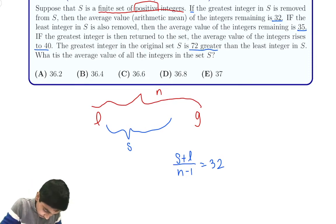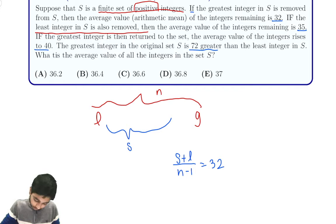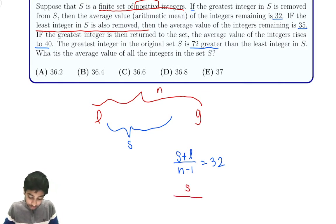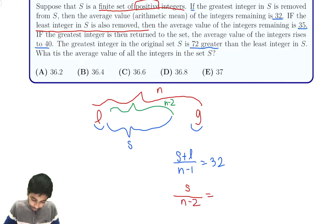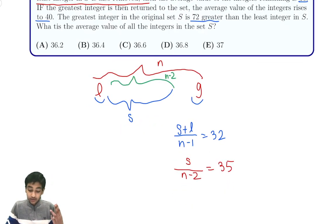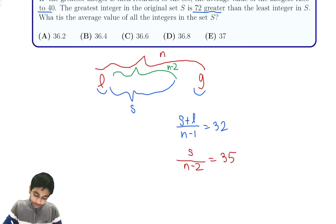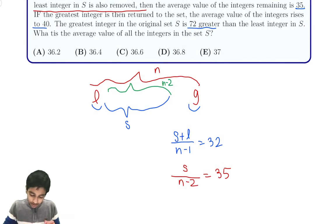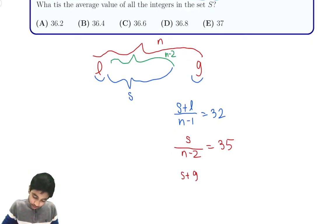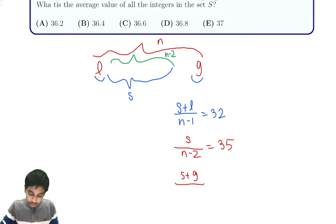Next, we remove the least integer. Now we're left with just s — the sum of the middle terms — over n minus 2 integers, so s divided by n minus 2 equals 35. Then the third condition: we put the greatest integer back into the set. Now the sum is s plus G, and there are n minus 1 total terms, so s plus G divided by n minus 1 equals 40.